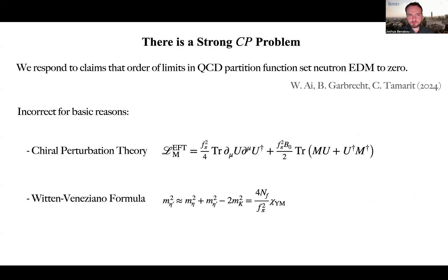In the second part of our paper, we respond to claims that a subtlety in the order of limits in the partition function of QCD would set the electric dipole moment of the neutron to zero. We argue that this is incorrect for basic reasons,